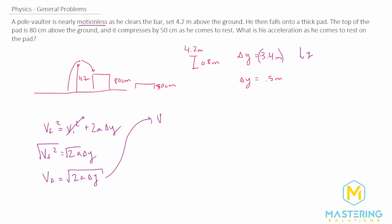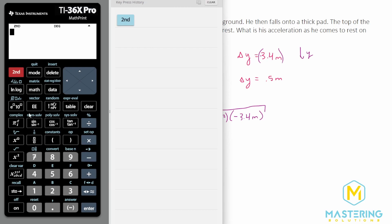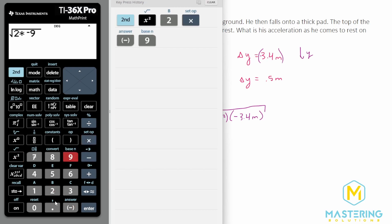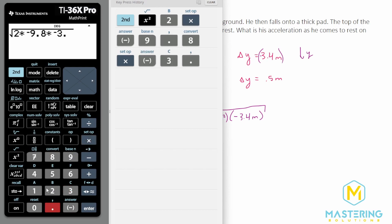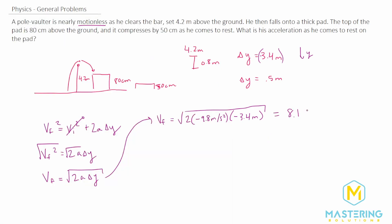He's in free fall, so the acceleration is negative 9.8 m/s². We have v_final = √(2 × (−9.8) × (−3.4)). His final speed right before he hits the pad is 8.16 meters per second. That is the final velocity for this first section.